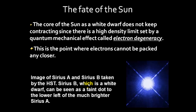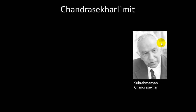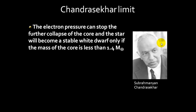One important thing: the star will not contract any further because the temperature is not enough to make carbon fuse. This effect is called electron degeneracy, meaning the atoms cannot be crushed enough to become anything else — the electrons can't be packed any closer. Electron pressure stops the further collapse of the star. The Sun will become a stable white dwarf only if the mass of the core is less than 1.4 solar masses — this is the Chandrasekhar limit. If what's left after the shell has drifted into space is greater than this, it will have another outcome.